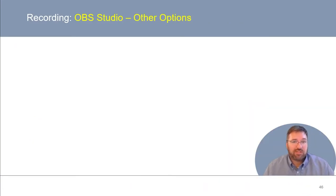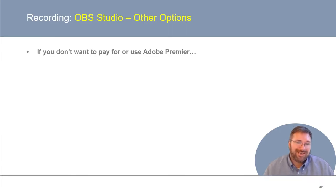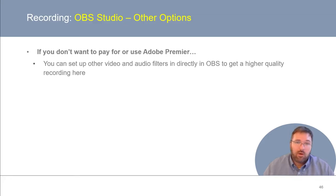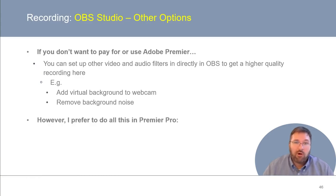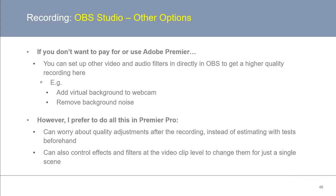At this point, we're set up to record in OBS Studio. However, I want to point you to a couple other options in case you're not interested in paying for Adobe Premiere Pro. Within OBS, you can set up video and audio filters directly in the OBS sources to get a higher overall quality of recording. For example, you can add your virtual background to your webcam footage, or remove background noise in your audio capture. Personally, I prefer to do all of this downstream in Premiere Pro, so I can worry about quality adjustments after recording instead of trying to estimate the right settings ahead of time. Saving this for Premiere Pro also lets you adjust effects very specifically for each individual clip.